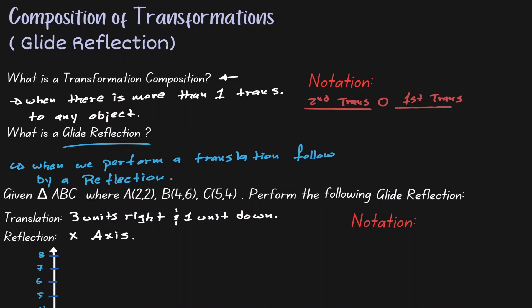Under a glide reflection, our first transformation is a translation. And on the left-hand side, we write down the reflection that we will be using.